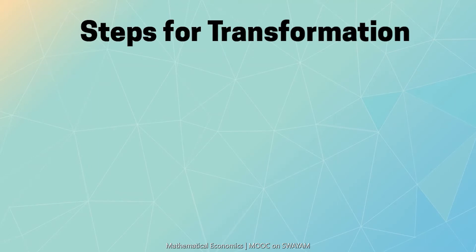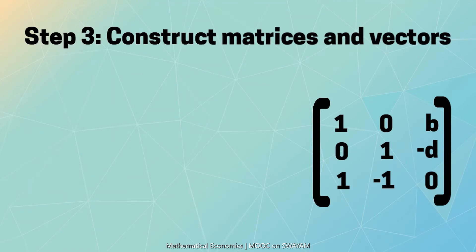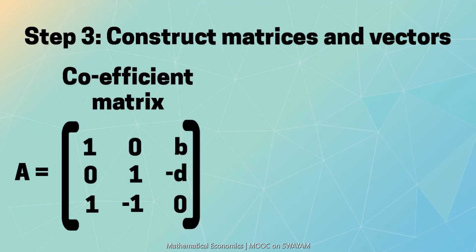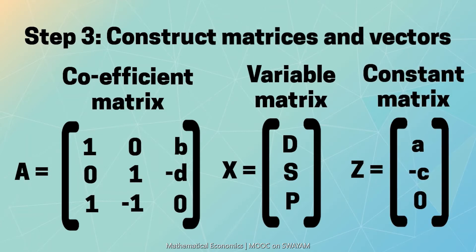In the third step, we construct matrices and vectors to transform the system of simultaneous equations to matrix form. Thus, we construct a matrix of coefficients of order 3 by 3, let us name it matrix A. We construct a column vector of variables of order 3 by 1, let us name it as X, and another column vector of constants of order 3 by 1, let us name it Z.